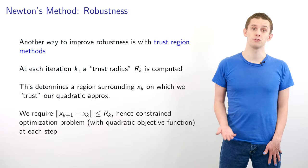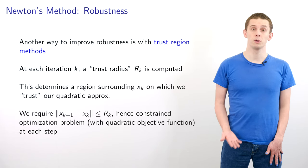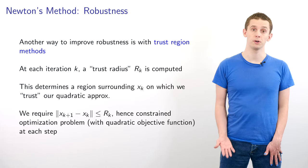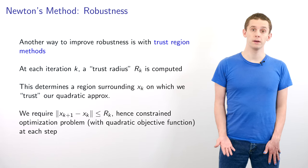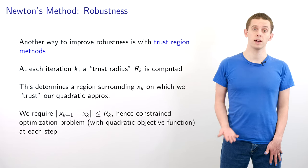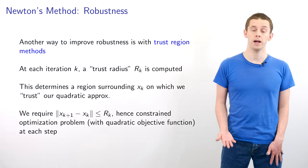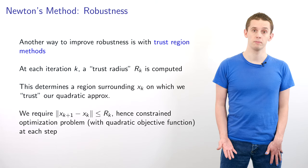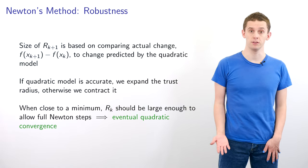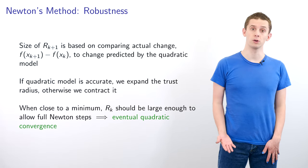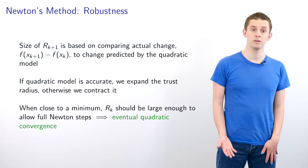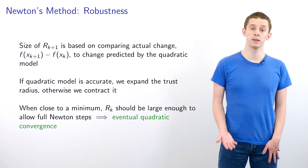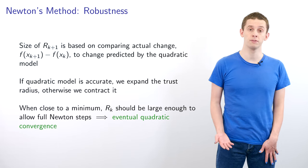Another way to improve robustness is using trust region methods. At each iteration k we compute a trust radius r_k, which determines a region surrounding x_k on which we trust our quadratic Taylor series approximation. We require that as we take a step from x_k to x_{k+1}, the size of that step has to be less than or equal to r_k. Hence we can solve a constrained optimization problem with a quadratic objective function at each step. The size of r_{k+1} is based on comparing the actual change f(x_{k+1}) minus f(x_k) to the change predicted by our quadratic model. If the quadratic model is accurate, we can expand the trust radius; otherwise we can contract it. When we're close to a minimum, r_k should be large enough to allow full Newton steps, and therefore we should eventually see quadratic convergence.